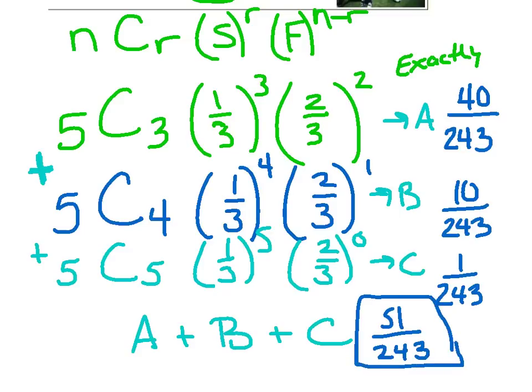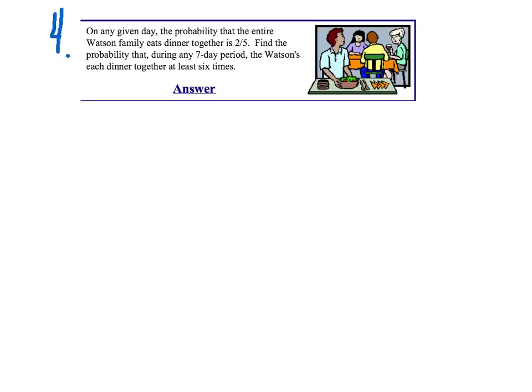We've covered at least and at most, let's try another one. On any given day, the probability the entire Watson family eats together is two-fifths. Find the probability that during any seven-day period, the Watsons will eat dinner together at least six times.